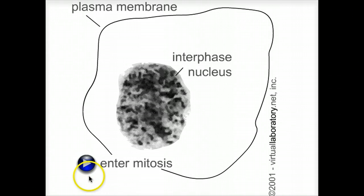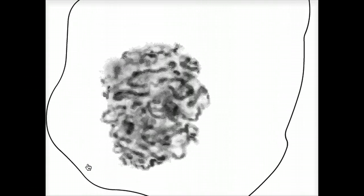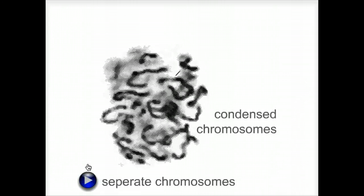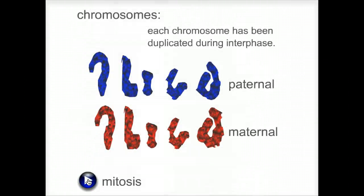Upon division, a process known as mitosis, the nuclear envelope breaks down and the chromosomes, which were extended before, condense into compact structures. Each chromosome has been duplicated previously and there are two sets — one inherited from the paternal parent, the second from the maternal parent.